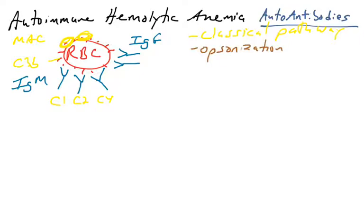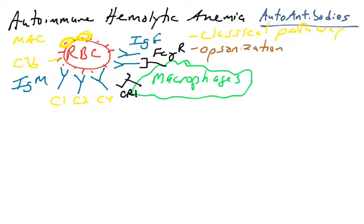Another way could be opsonization. If you cover a pathogen with IgG, we know that macrophages have FC gamma receptors that will facilitate antibody-mediated phagocytosis. We also know that macrophages have complement receptors that will help phagocytosis of anything covered in complement.